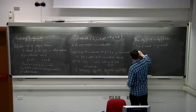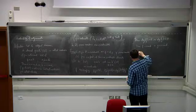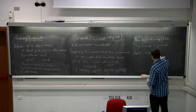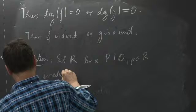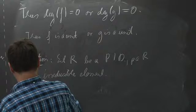Proposition: let R be a principal ideal domain and P in R an irreducible element. Then the ideal generated by P is a maximal ideal in R. Consequently, R mod (P) is a field.